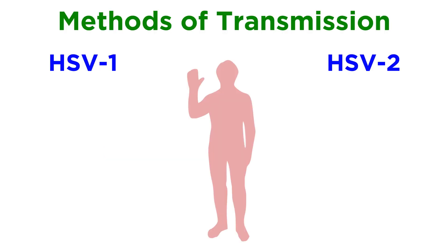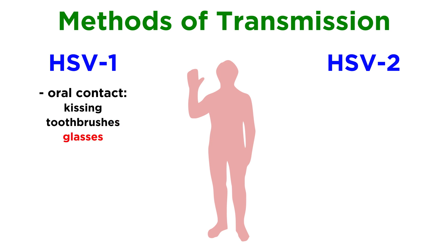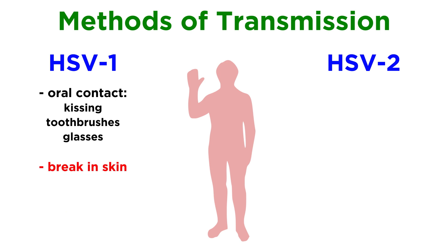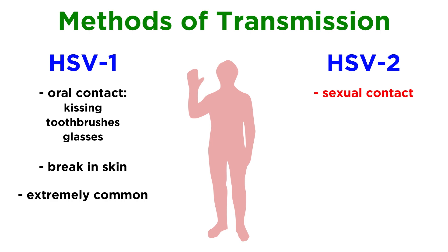HSV1 is typically spread by oral contact, like kissing, or through sharing toothbrushes, glasses, or other saliva-contaminated items. The virus is actually quite fragile outside of a cell, so there's really a short window where you could potentially catch it by sharing a drink. It can also enter through a break in the skin. HSV2, on the other hand, is spread mainly by sexual contact or from an infected mother to her infant at birth.